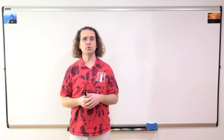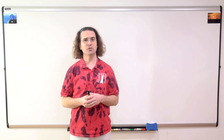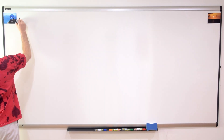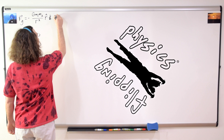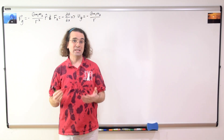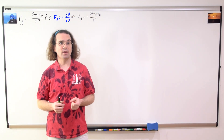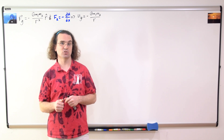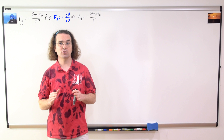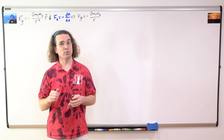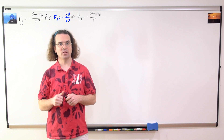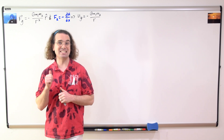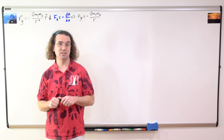Good morning. We have already used Newton's universal law of gravitation to determine the equation for universal gravitational potential energy. We did that by using the equation that relates a conservative force to the potential energy associated with that conservative force: the force equals the negative of the derivative with respect to position of the potential energy associated with that force. Please remember that this equation is not on the AP Physics C equation sheet.